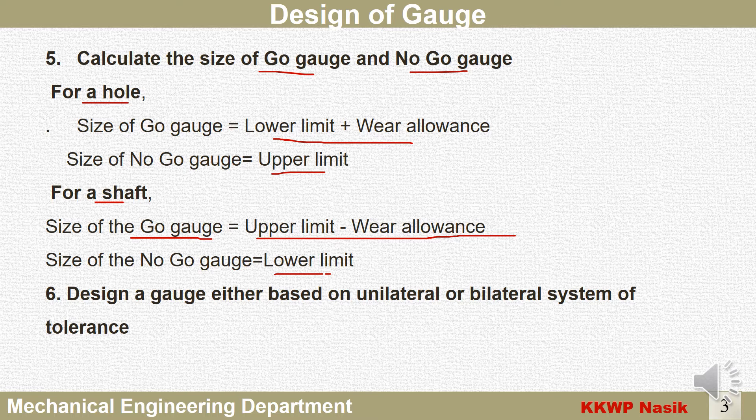For a hole the no-go gauge corresponds to the upper limit, and for a shaft it corresponds to the lower limit. The sixth step is to design the gauge based on either a unilateral or bilateral system of tolerance. The problem data will specify which system to use.